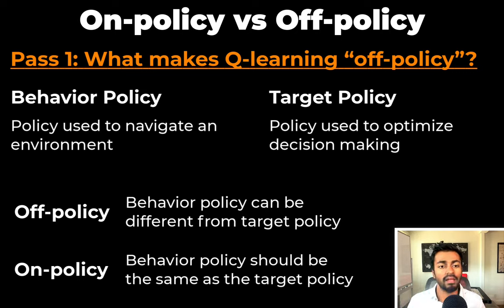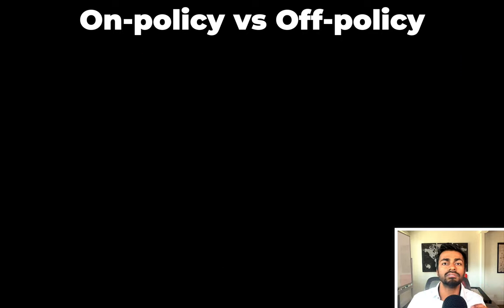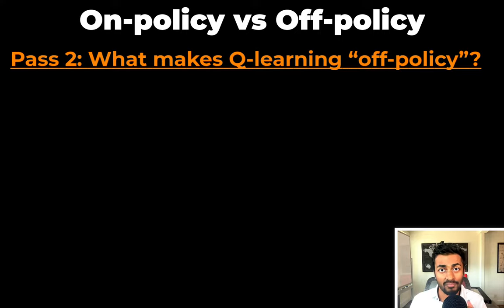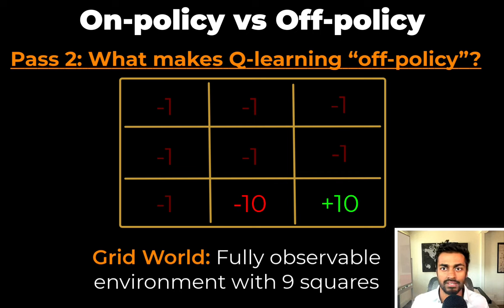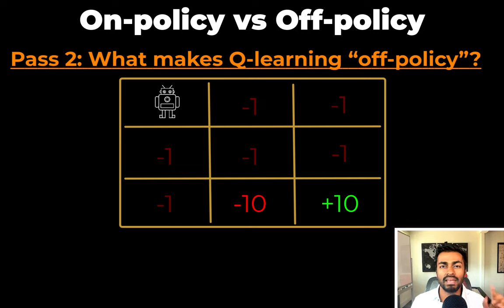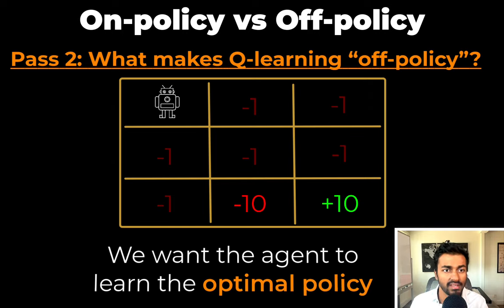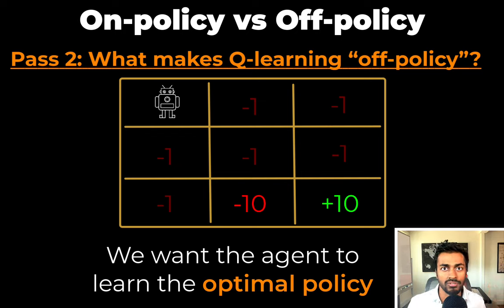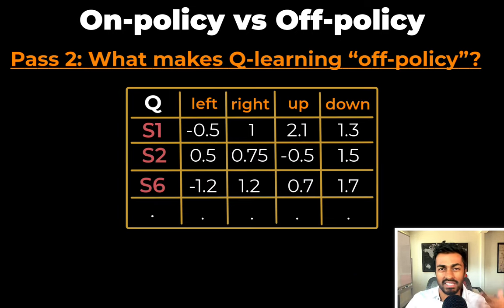That ends pass one. Now let's dive into Q-learning specifically and discuss why it's an off-policy algorithm in more detail. Let's take a fully observable grid world of nine squares. There's a plus-10 square, a minus-10 square, and everything else is negative one. The goal for the agent is to start in the top left corner and reach the plus-10 reward spot, making the best possible set of actions. We want the agent to learn an optimal policy using Q-learning, and to use Q-learning we need a Q-table that will help dictate actions.